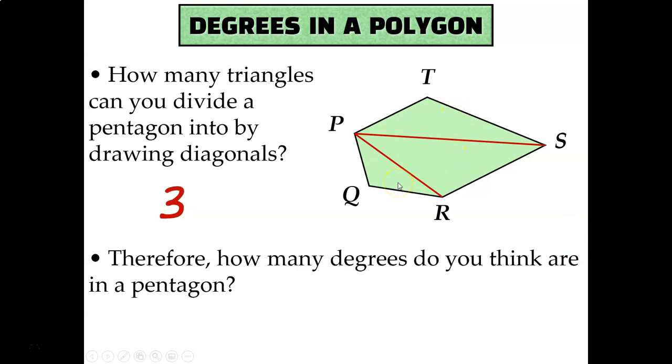One, two, three. And you would get the same answer whether you drew your diagonals from Q or R or S or T. So if there's three triangles in a pentagon, how many total degrees are in the pentagon? Well, I'd multiply 3 times 180 because each triangle is worth 180 degrees, so the sum of the interior angles of a pentagon must be 540 degrees.